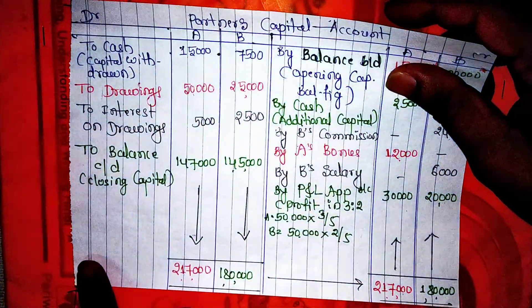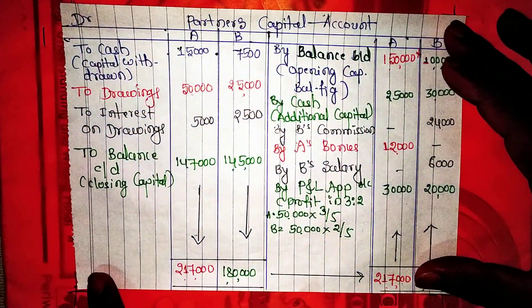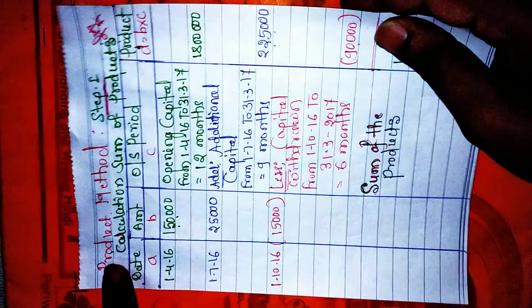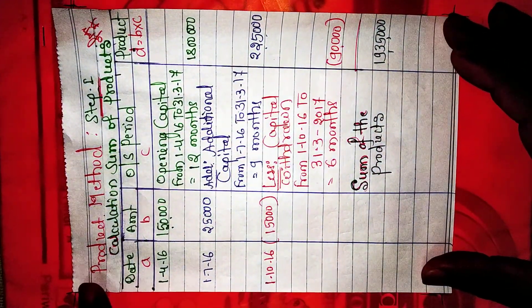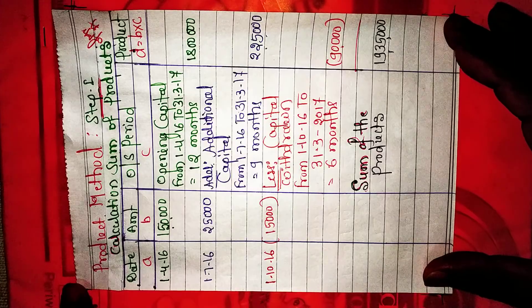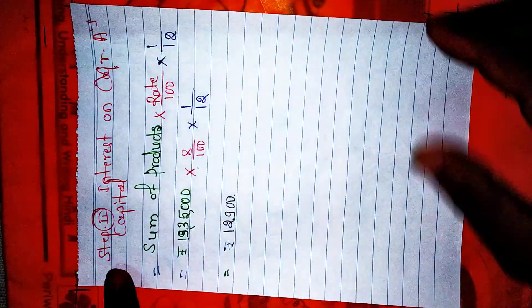This is the product method. Step number 1: opening capital. Step number 2: product. Step number 3: apply this formula.